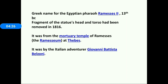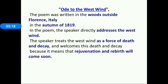Ozymandias is the name of the Egyptian pharaoh also known as Ramesses II, who ruled Egypt in the 13th century BC. The poem was written when fragments of the statue — head and torso — had been removed in 1821 from the mortuary temple of Ramesses, the Ramesseum at Thebes, by Italian adventurer Giovanni Battista Belzoni.